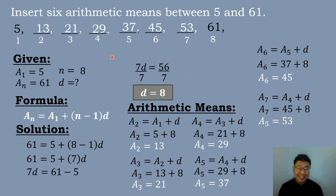So the six arithmetic means between 5 and 61 are: 13, 21, 29, 37, 45, and 53.